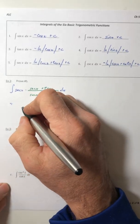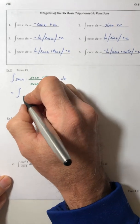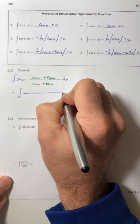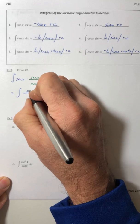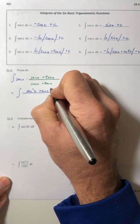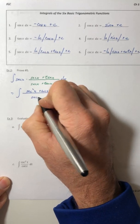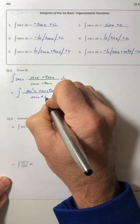And we're going to distribute that secant all the way across. So I end up with secant squared plus secant tangent all over secant plus tangent.